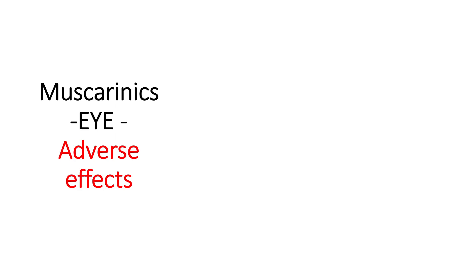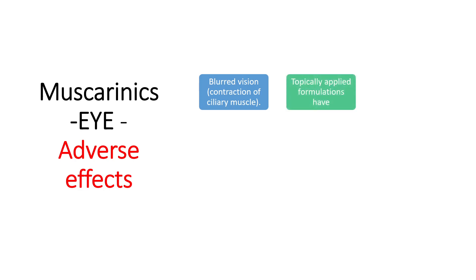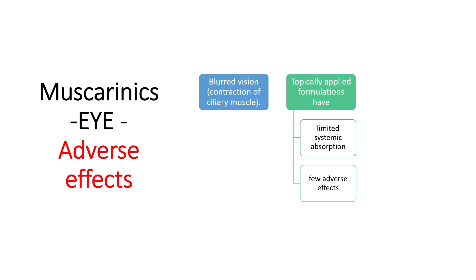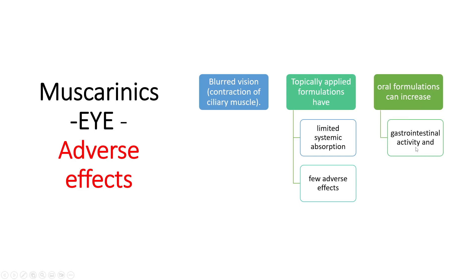Adverse effects of muscarinic receptor agonists include blurring of vision due to contraction of the ciliary muscles, which also have M3 receptors. When used topically as eye drops, systemic absorption is limited, leading to very few systemic adverse effects. However, if given orally, these drugs can increase gastrointestinal secretions and cause sweating due to increased glandular activity.